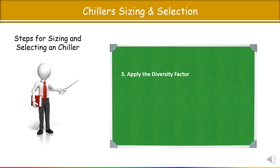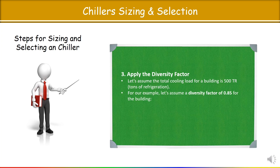The third step is to apply the diversity factor. Let us assume the total cooling load calculated from HAP software or any other software or manual calculation is 500 TR — ton of refrigeration. For example, we are considering a diversity factor of 0.85 for the building, depending on the building type.